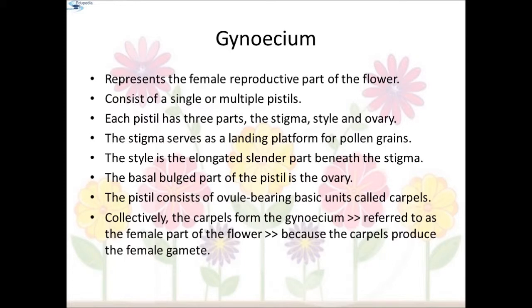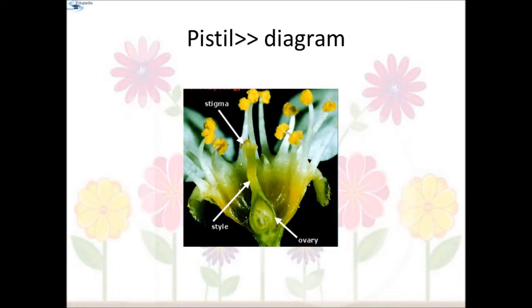The pistil consists of ovule-bearing basic units called carpels. Collectively, the carpels form the gynoecium, which is sometimes referred to as the female part of the flower, because the carpels produce the female gamete. This is the diagram of a pistil — here you can see the style, the stigma, and the ovary.